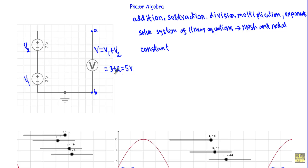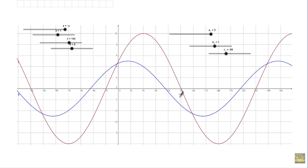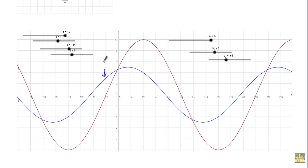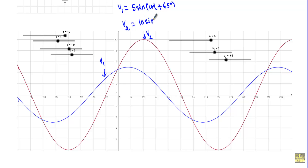Now, what will happen if we have an alternating voltage in place of the DC voltages? How do we calculate the algebraic sum of two or more voltages or currents that are varying sinusoidally with respect to time? Let's say we have two sinusoidal alternating voltages: V1 with equation 5·sin(ωt + 65°) and V2 with equation 10·sin(ωt + 30°).